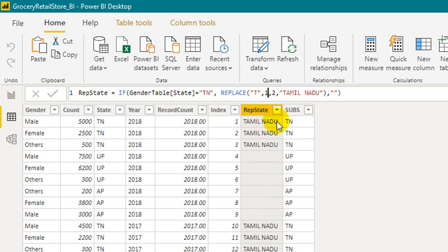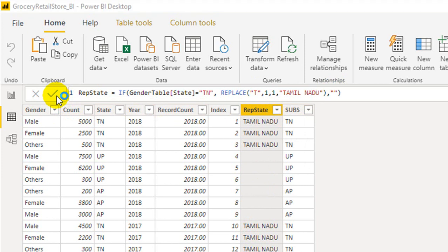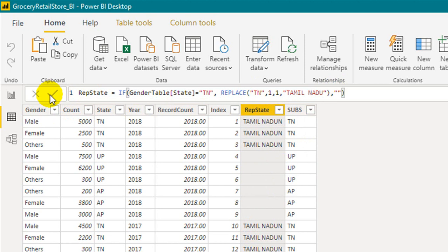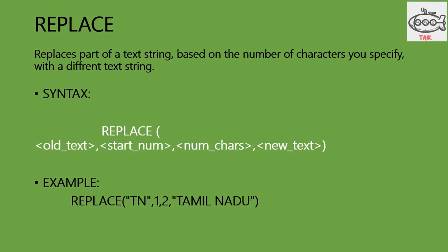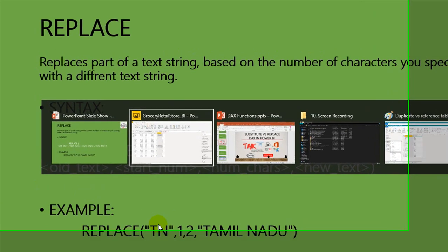If I change the number of characters to 1 and commit, it finds 'TN' and replaces only the first character 'T' with 'Tamil Nadu', leaving the 'N' untouched. So the result becomes 'Tamil Nadu N' — because the replace function only replaced 'T' and left 'N' as it was.